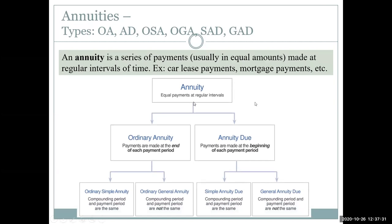At their base, annuities are just equal payments made at regular intervals. The two categories are ordinary annuities and annuity dues. For ordinary annuities, payments are made at the end of each payment period — for example, leasing a car and making payments at the end of the month. If payments are made at the beginning of the month, that's an annuity due. So it's just when the actual payment is made that differentiates them.